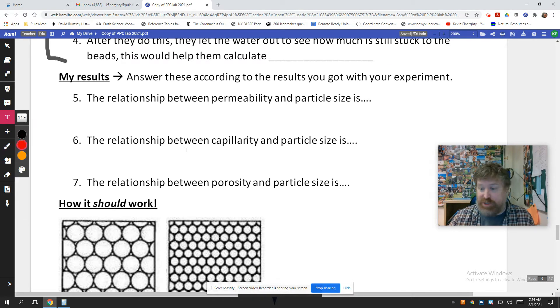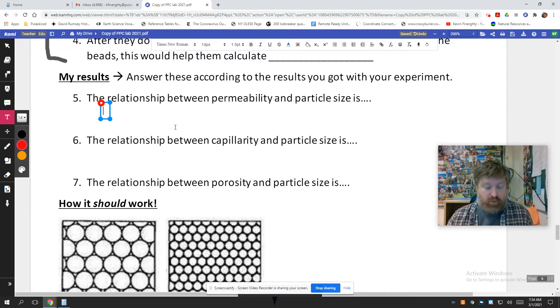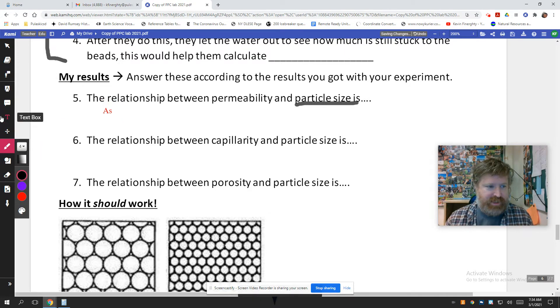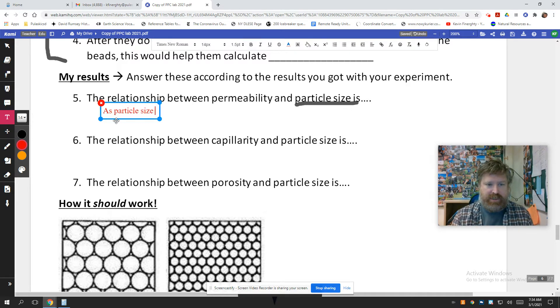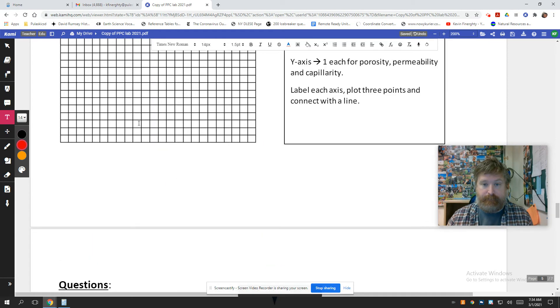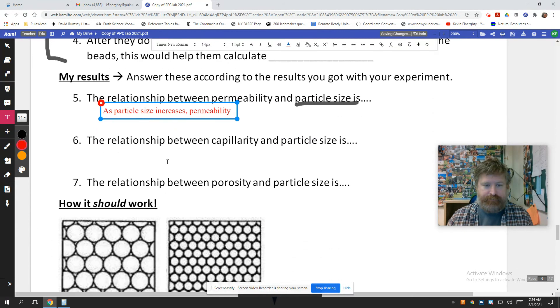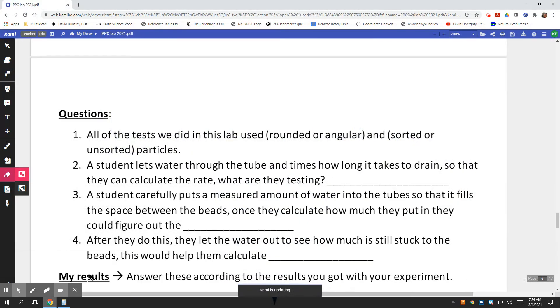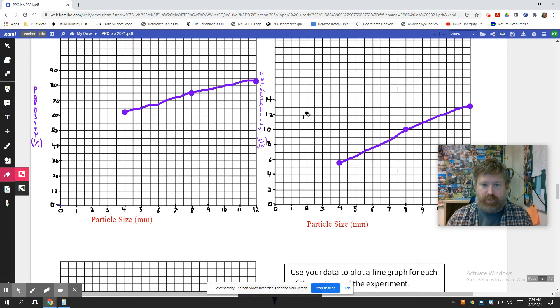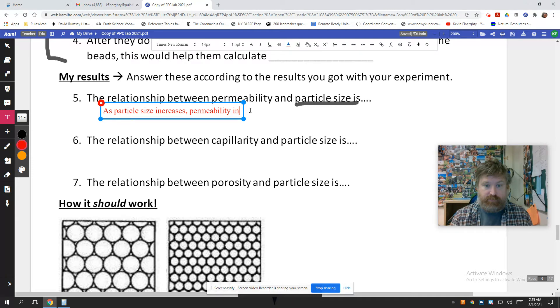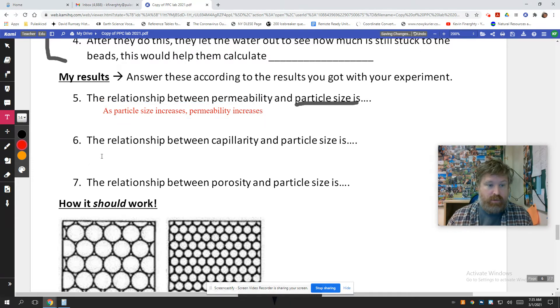All right. My results. So relationship questions. We're going to answer these all as relationship questions, where we always start with as. And then we say the first thing. Oh, I reversed them. Man, two typos in this lab. This lab is messy. We're going to want to say particle size first. As particle size increases, and according to my results, permeability—oops, I'm not looking at the—nailing it this morning, guys. Crushing it. So permeability, as particle size increased, it increased.